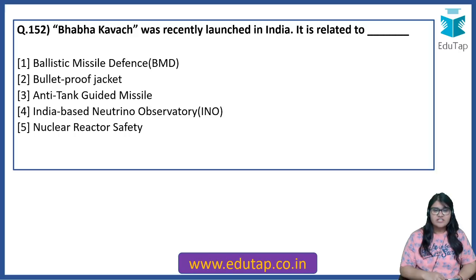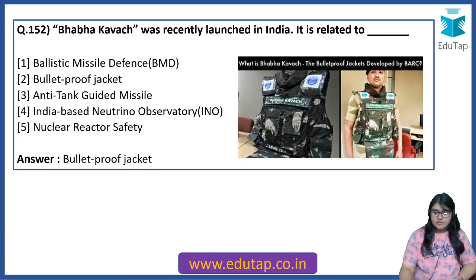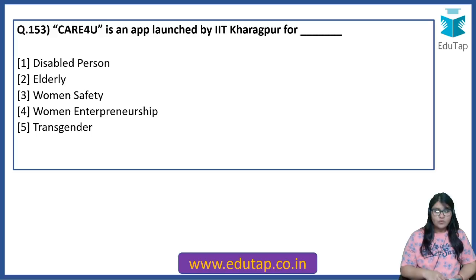Baba Kavach was recently launched in India — it is related to what? The answer is a bulletproof jacket. Baba Kavach is the name of a bulletproof jacket. It is developed by DRDO.